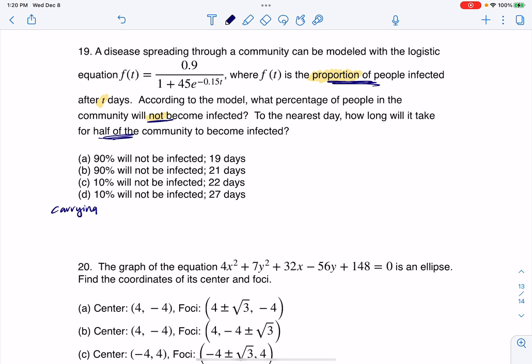All right, so let's talk about this. If we talk about our carrying capacity for this problem, we always take that number that's on the numerator. So in this case, it's 0.9, or I could say 90%, which means eventually 90% of our community will become infected. That's what that's saying. So 90% of community infected, right? Which complementarily, the complement to this means 10% of the community will not be infected, right? And that's what they were asking us here. We see the word not. So at this point, I can rule out A and I can rule out B.